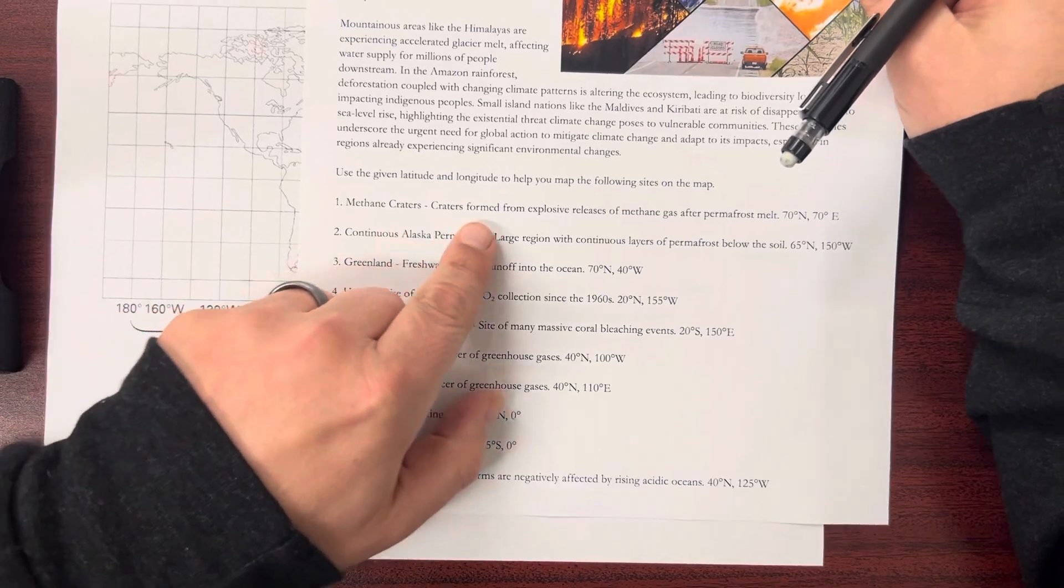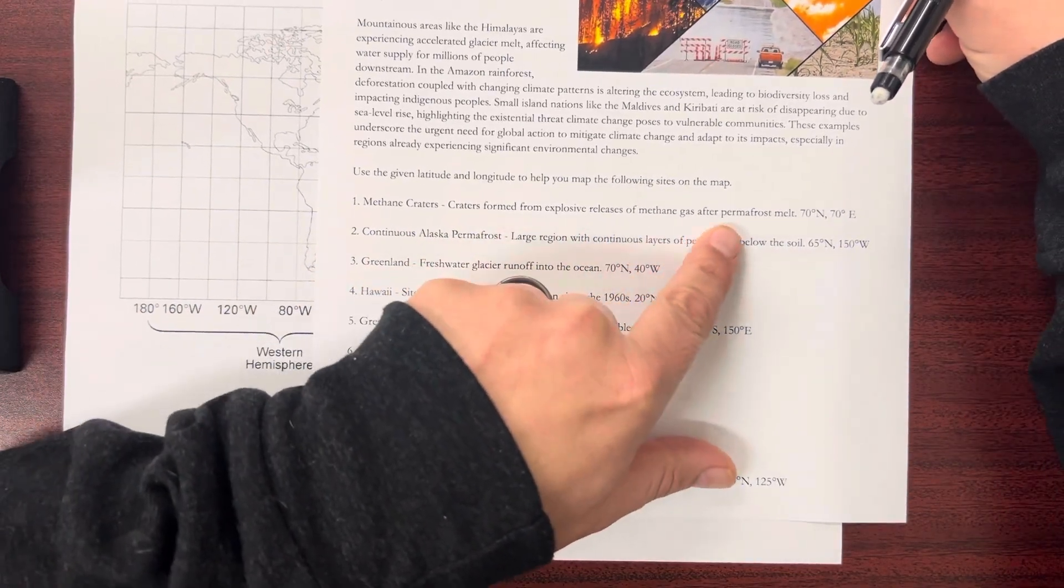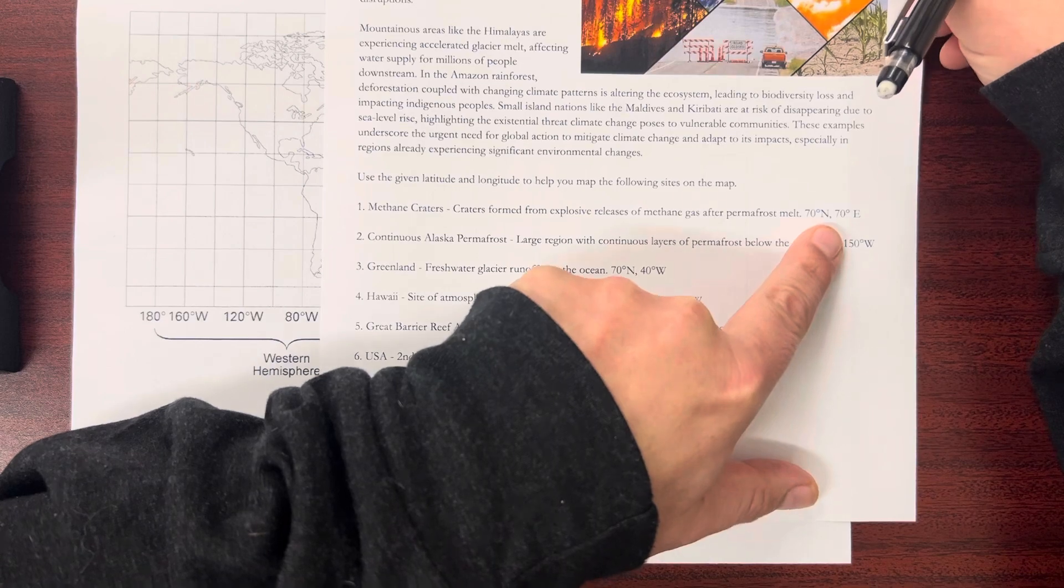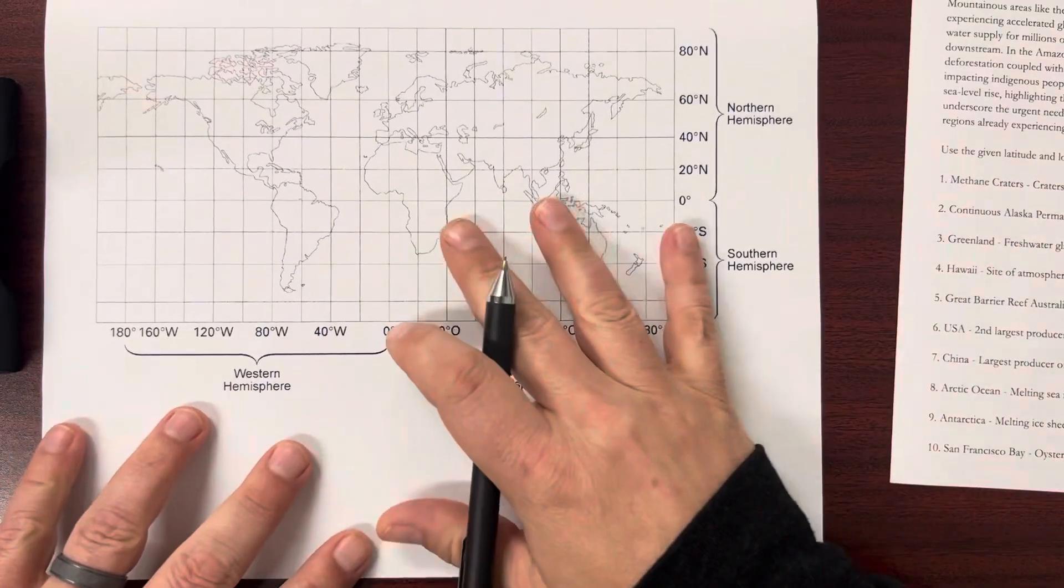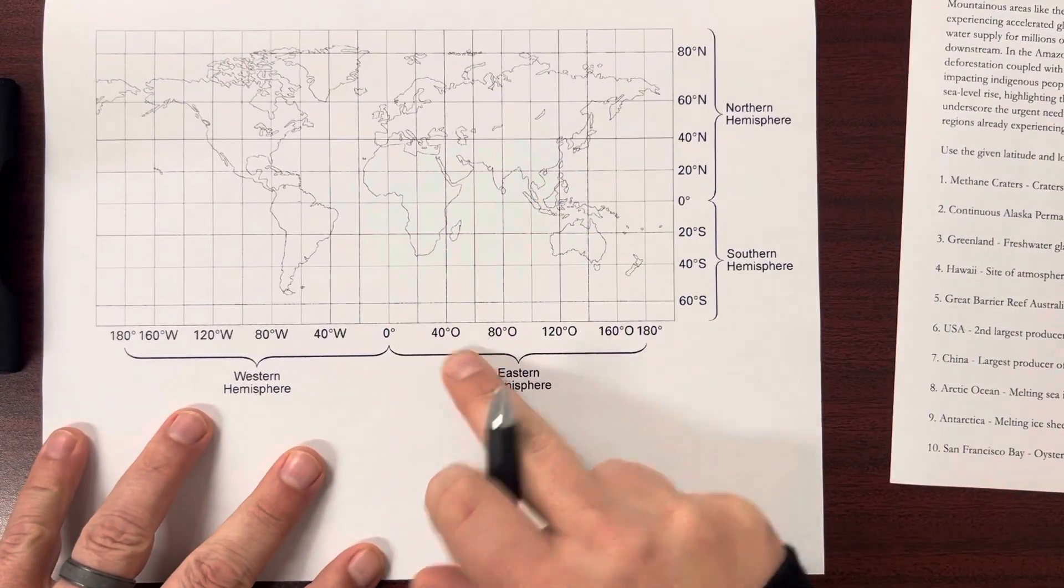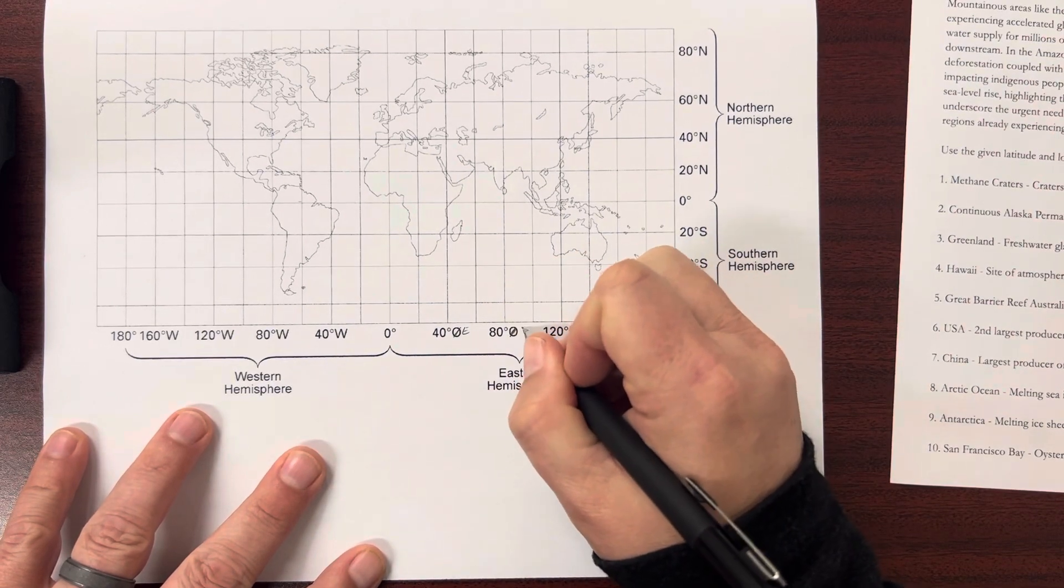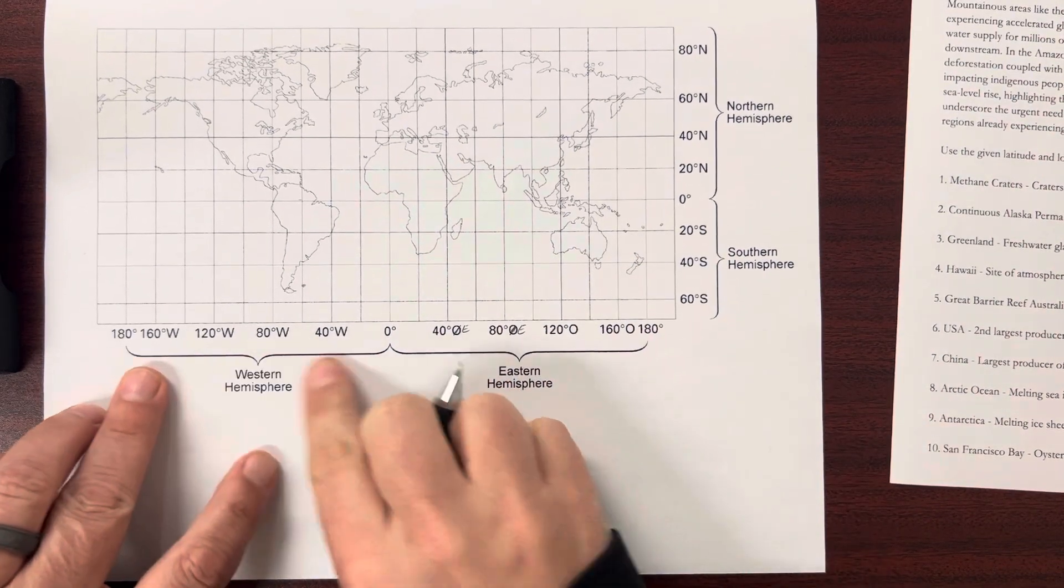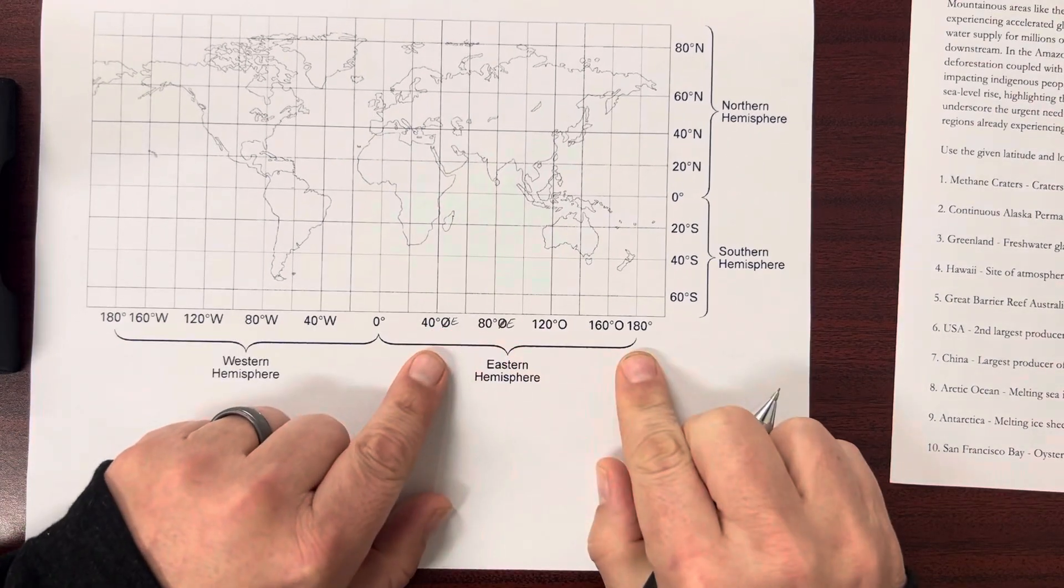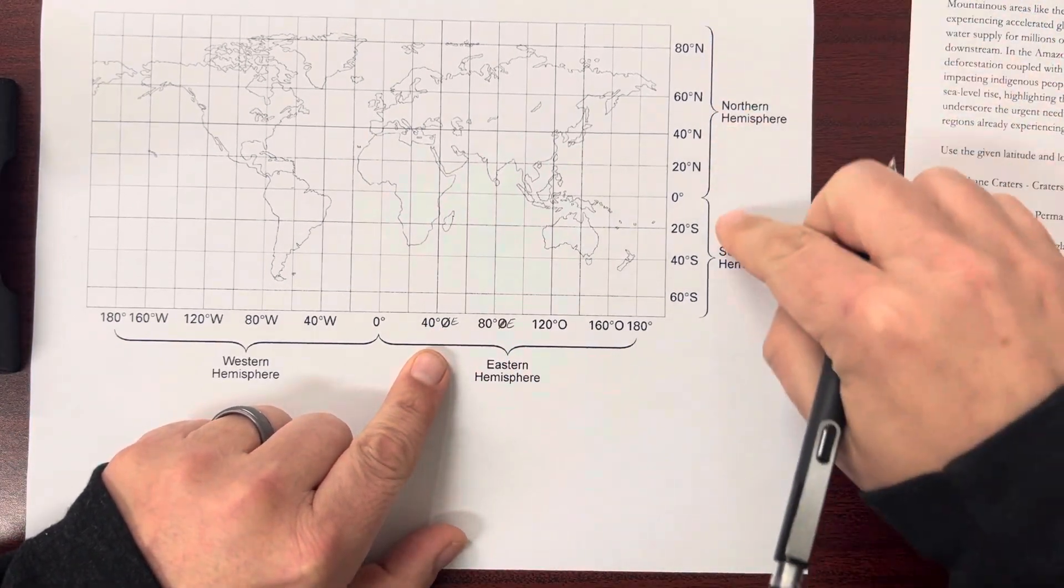Methane craters. Craters form from explosive releases of methane gas after permafrost melt. And on our map here, the only thing that you can change - this is east. So these are east. We got the western hemisphere, the eastern hemisphere, northern hemisphere, southern hemisphere.